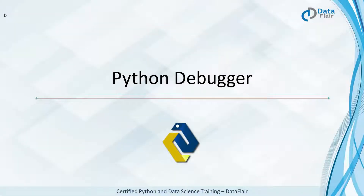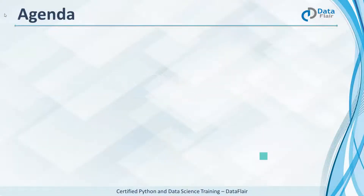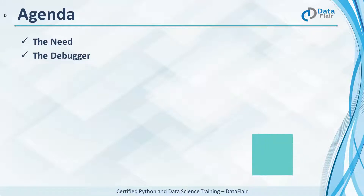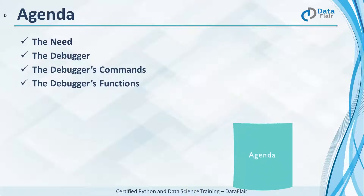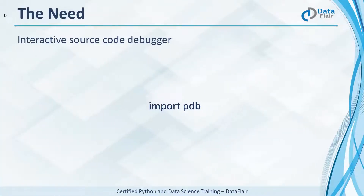Let's talk about debugging — the Python Debugger and its commands and functions. The Python Debugger is an interactive source code debugger. It lets us set conditional breakpoints and single-step at the source line level so we can investigate what's going on. It also supports inspection of stack frames, source code listing, and evaluation of arbitrary code in any stack frame's context. For the times you have no clue where your code is going wrong, the debugger comes to the rescue.